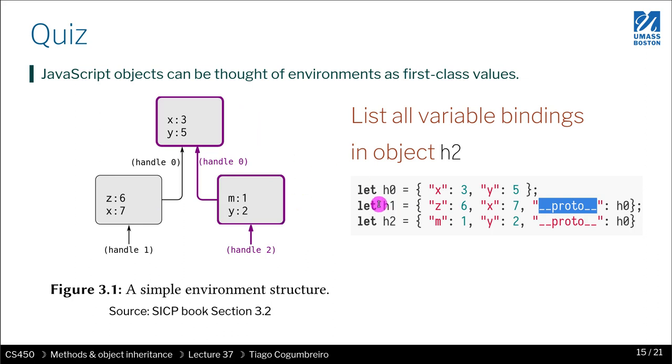To recap, the object structure of JavaScript maps exactly the environment structure of Racket. And looking up fields works exactly the same, as long as you follow the parent links through the __proto__ fields. That's the takeaway from this slide.